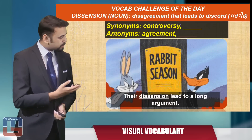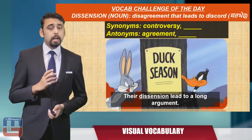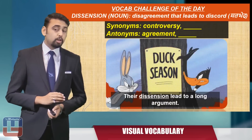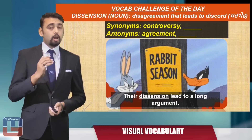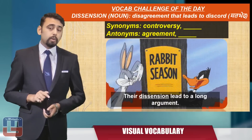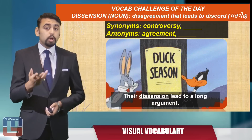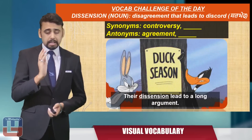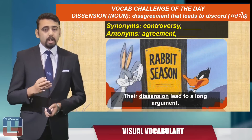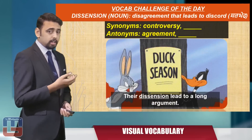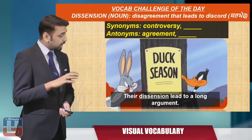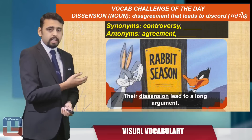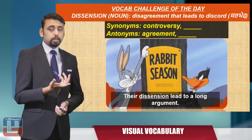Today's vocab challenge word is 'dissension.' Being a noun, it means disagreement that leads to discord; in Hindi it's 'Madhbhed.' The given synonym is 'controversy' and the given antonym is 'agreement.' We want you to find the missing synonym and antonym. You can see the duck-season rabbit-season dissension is still going on — 'Dissension led to a long argument and is still going on.' Answer correctly to become the next vocab champion!